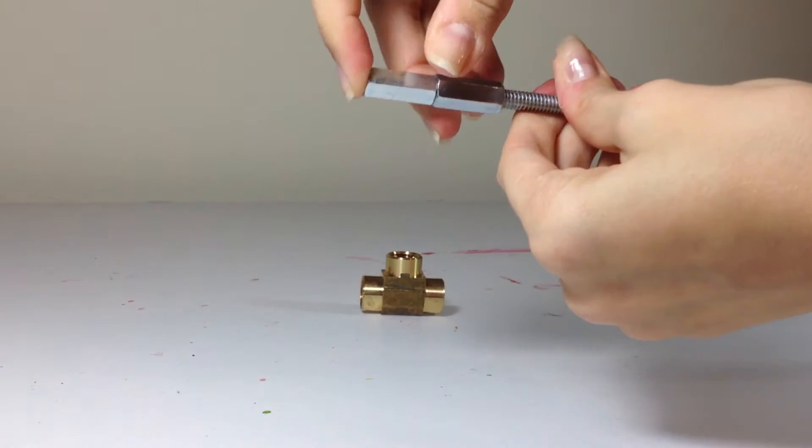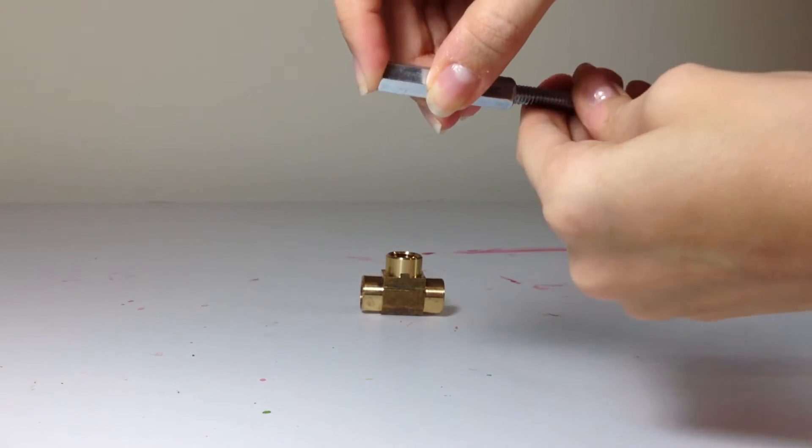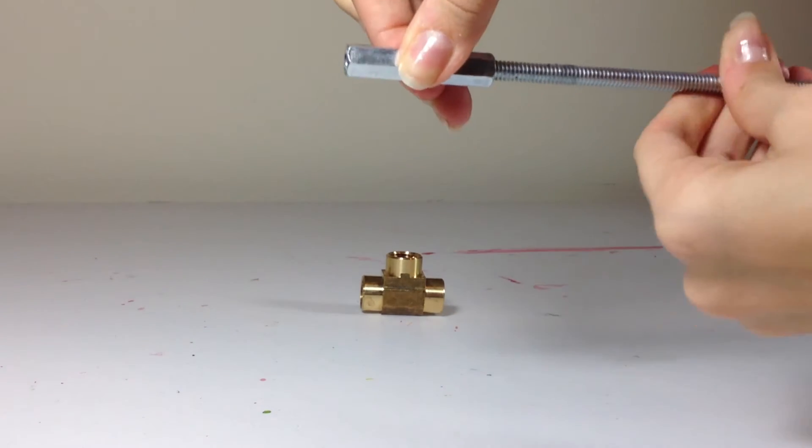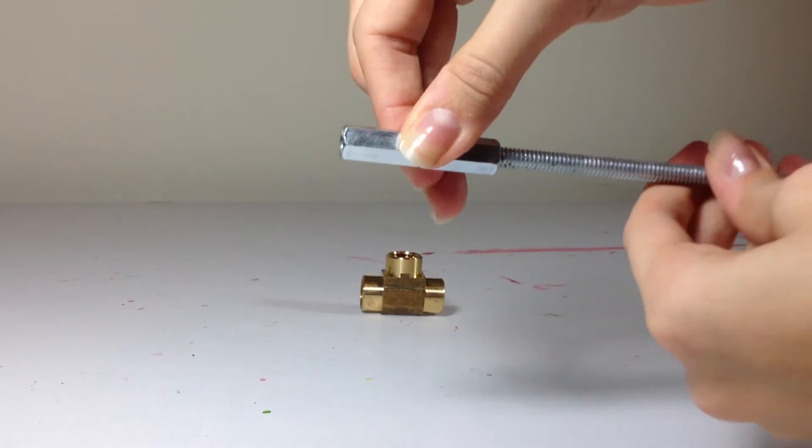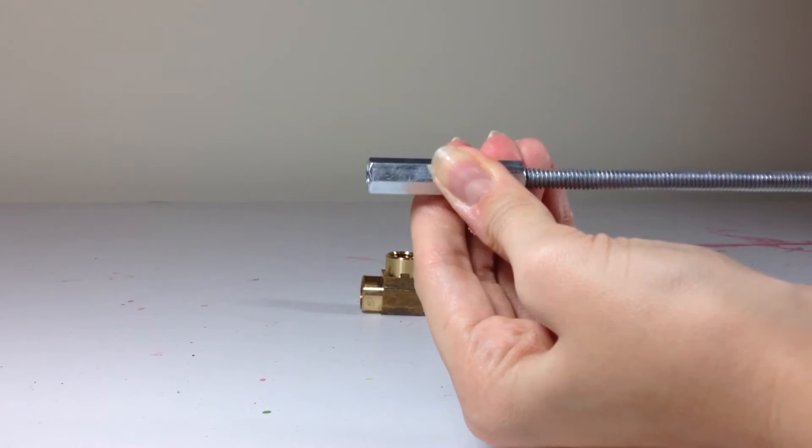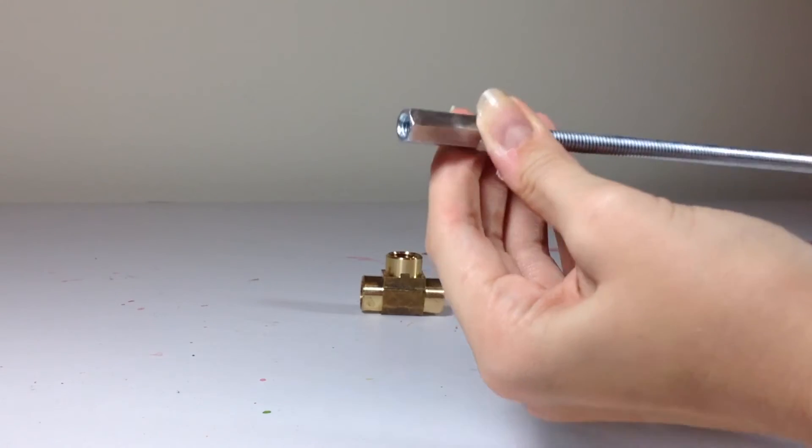And then once you kind of get that second one on there, just pinch them together in the center. And then roll the bar and it makes it a little bit easier to get that threaded through.